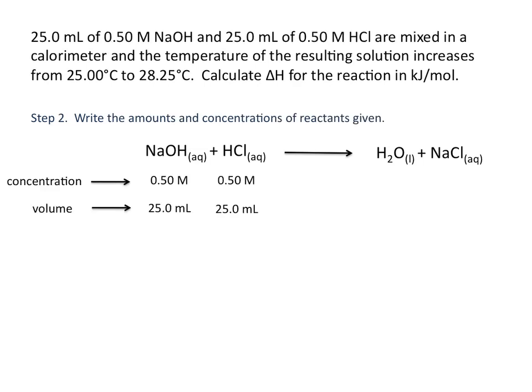Our second step will be to write the amounts and concentrations of each reactant given. So we have 0.5 molar NaOH and 0.5 molar HCl. We also have 25 milliliters of each of these solutions.